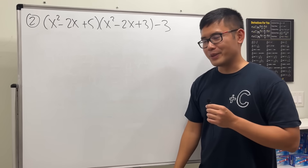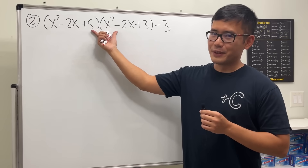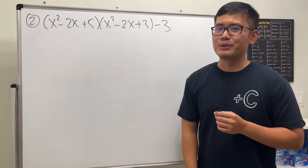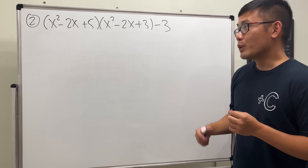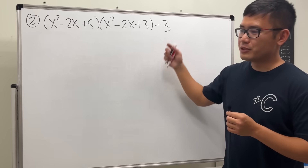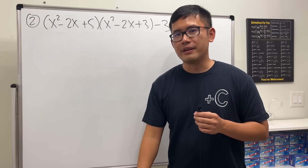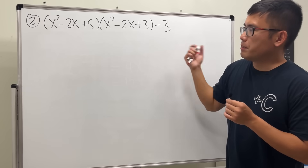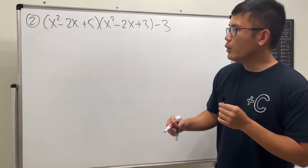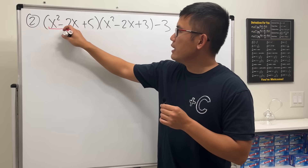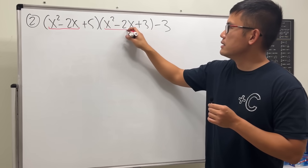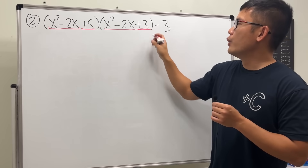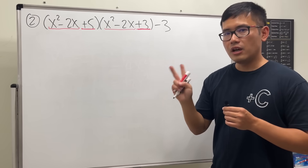For the second problem, we notice this expression is just the first one minus 3 at the end. We could expand everything and do the double cross method again, but we don't have to. Notice both factors from before contain x squared minus 2x — one with plus 5 and one with plus 3. They differ by just 2, which suggests a substitution.